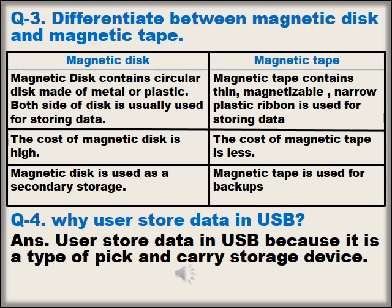Question number 3: Differentiate between magnetic disc and magnetic tape. Magnetic disc contains a circular disc made of metal or plastic, and both sides of the disc are usually used for storing data. Magnetic tape contains a thin, magnetizable, narrow plastic ribbon used for storing data. The cost of magnetic disc is high, while the cost of magnetic tape is less. Magnetic disc is used as secondary storage; magnetic tape is used for backups.